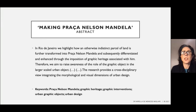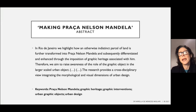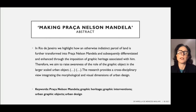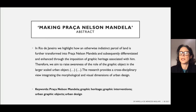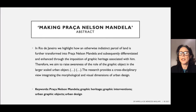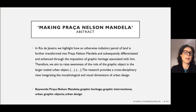In making Praça Nelson Mandela in Rio de Janeiro, we highlight how an otherwise indistinct parcel of land is further transformed into Praça Nelson Mandela and subsequently differentiated and enhanced through the imposition of graphic heritage associated with him. We therefore aim to raise awareness of the role of the graphic object in the larger-scaled urban object. The research provides a cross-disciplinary view integrating the morphological and visual dimensions of urban design. This paper presents the initial research looking into Praça Nelson Mandela in Rio de Janeiro, aiming to raise awareness of the collection of graphic objects representing Nelson Mandela in this square and the impact such objects can have in an urban environment.